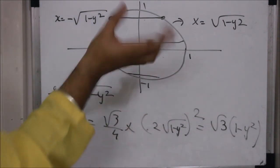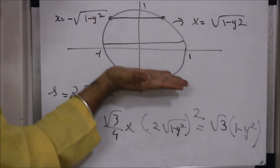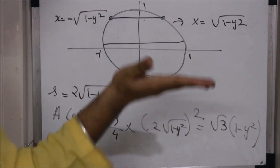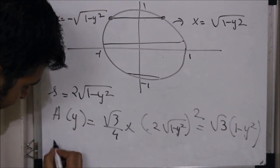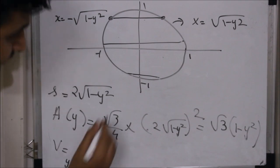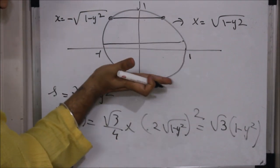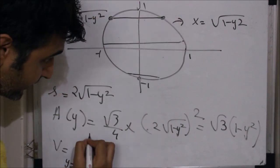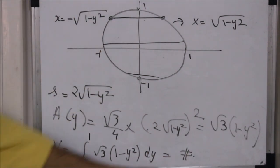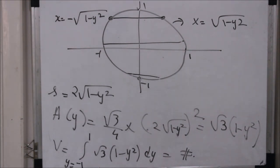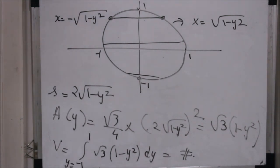The area of each equilateral triangle depends on where I drop the plane — a smaller triangle near y = ±1 and a bigger one near y = 0. To find the volume, I integrate from y = -1 to y = 1: ∫₋₁¹ √3(1-y²) dy. The result gives the volume of this surface. Whenever a surface and its cross sections are given, find the area of the cross section, integrate, and you get the volume.